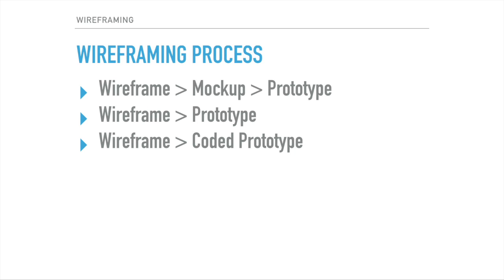Now let's go to the wireframing process. There are many processes that can be used for wireframing depending on the project, but for web design this is usually the process used in the industry. The first is the traditional waterfall approach: wireframe, then mock-up, then prototype. Fidelity and functionality increase linearly — the wireframe specializes in outline, the mock-up on visual details, and the prototype on usability and interactivity.